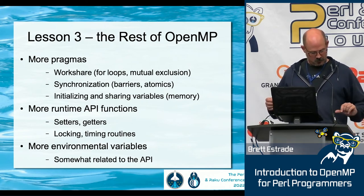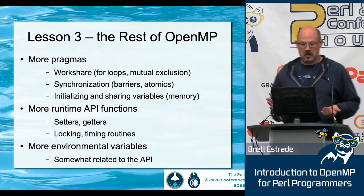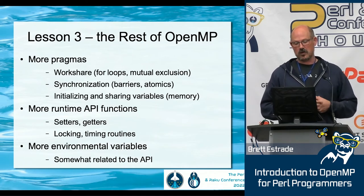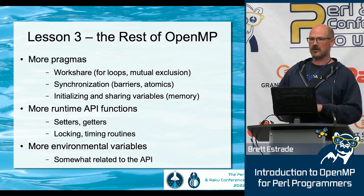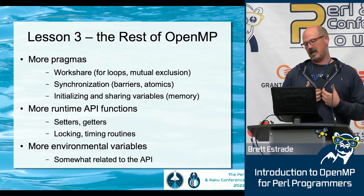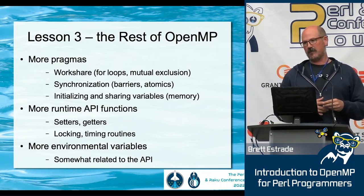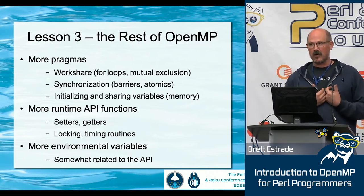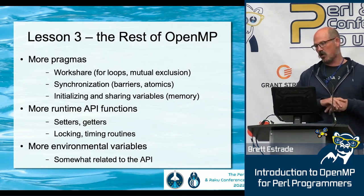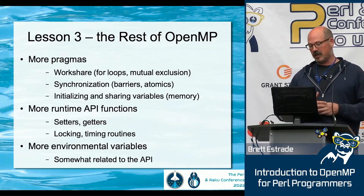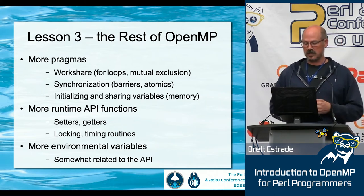We've got 17 minutes, so I'm just going to talk about some pragmas, runtime functions, and environmental variables. The pragmas are where you implement what are called work-sharing constructs. If you have a loop and want to distribute iterations across different CPUs, you use a work-sharing construct. If you have a team of threads and want them to at some point run sequentially, or wait or not wait on one another, you use synchronization constructs. We already talked about initialization and variable sharing.